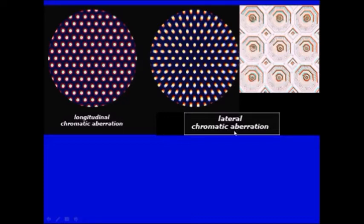On the other side, the lateral chromatic aberration and the central part everything is sharp and there is no colors. But if you go to the periphery points are distorted and you can see the colors.